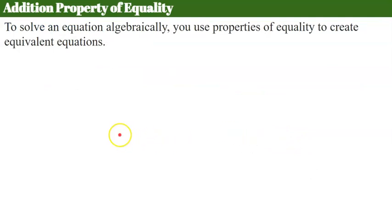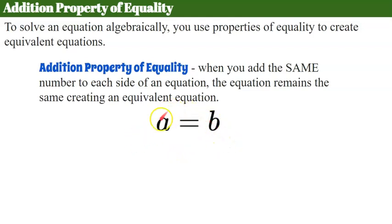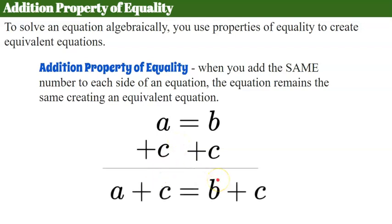We're going to use the addition property of equality. To solve an equation algebraically, we use properties of equality to create equivalent equations — we must keep the balance. The addition property of equality states that when you add the same number to each side of an equation, the equation remains the same, creating an equivalent equation. So if a equals b and I add c to each side, giving us a plus c equals b plus c, this equation is the same as the original.